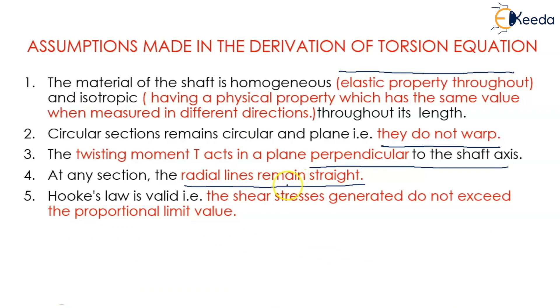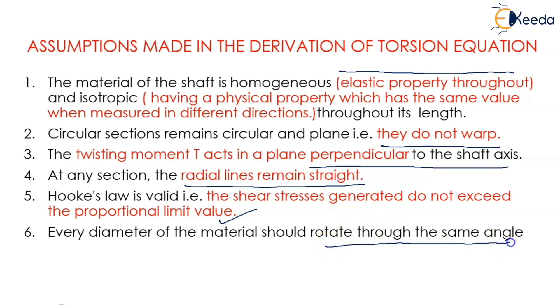Hooke's law is valid, that is, the shear stresses generated do not exceed the proportional limit value. And every diameter of the material should rotate through the same angle. Once the shaft is rotating, every element of the shaft rotates through the same angle.